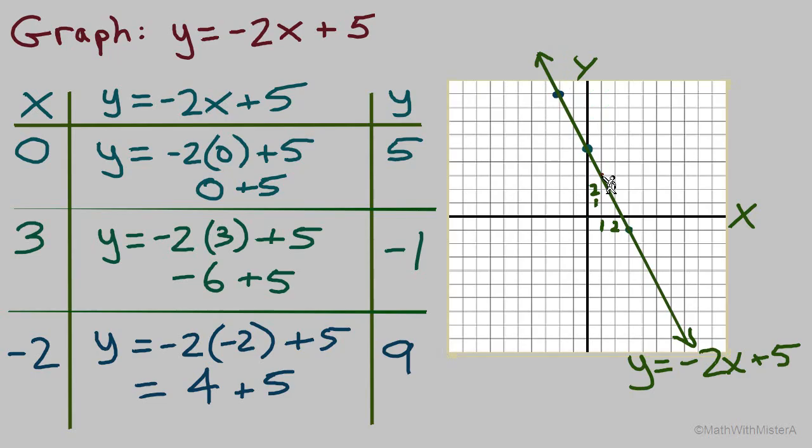We can see a point right here, which represents x equals 1 and y equals 3. So if you used x equals 1, it would give you the ordered pair (1, 3). Here's another point at (2, 1). So if you chose x equals 2, you would have an ordered pair at (2, 1).